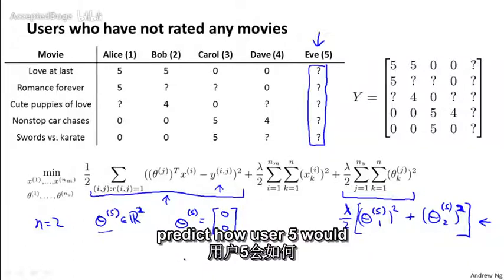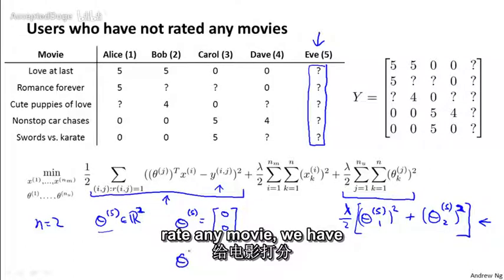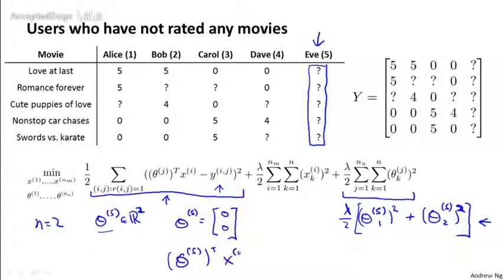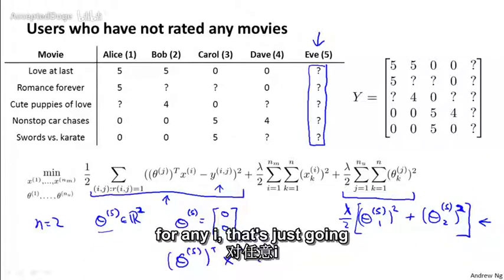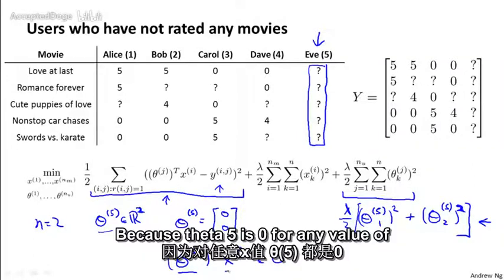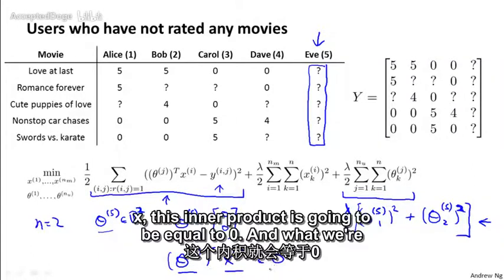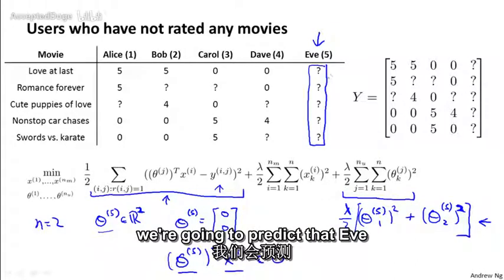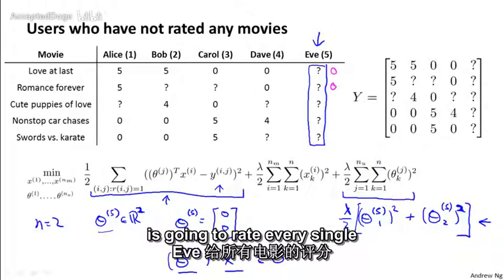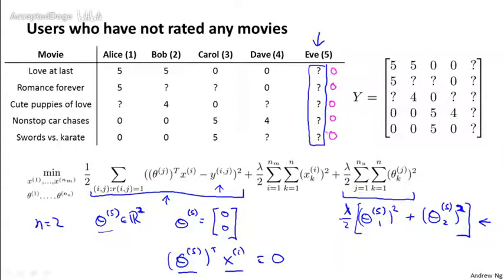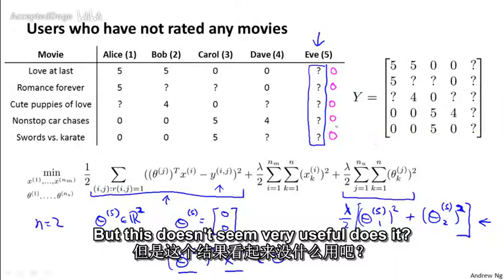And so when we go to predict how user 5 will rate any movie, we have that theta 5 transpose xi for any i, that's just going to be equal to 0. And what we're going to have, therefore, is that we're going to predict that Eve is going to rate every single movie with 0 stars. But this doesn't seem very useful, does it?